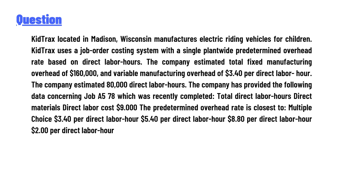Kid Track, located in Madison, Wisconsin, manufactures electric riding vehicles for children. Kid Track uses a job order costing system with a single plant-wide predetermined overhead rate based on direct labor hours. The company estimated total fixed manufacturing overhead of $160,000 and variable manufacturing overhead of $3.40 per direct labor hour. The company estimated 80,000 direct labor hours.